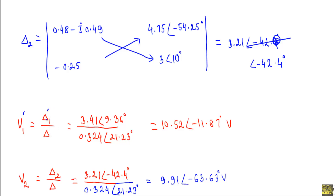Node voltage V1 equals delta one over delta: 3.41∠9.36° divided by 0.324∠21.23°, which equals 10.52∠−11.87° volts. Node voltage V2 equals delta two over delta: 3.21∠−42.4° divided by 0.324∠21.23°, which equals 9.91∠−63.63° volts. These are the two node voltages for the given network. That's it, thank you.